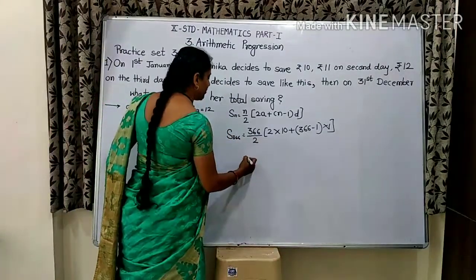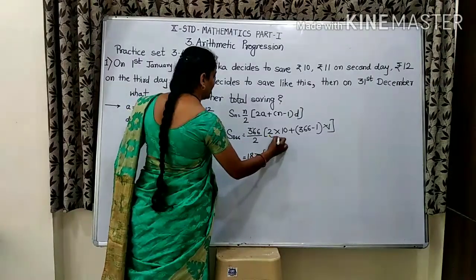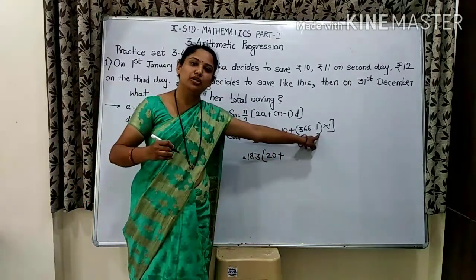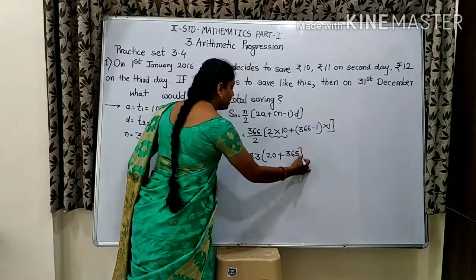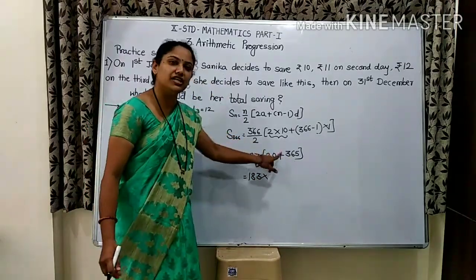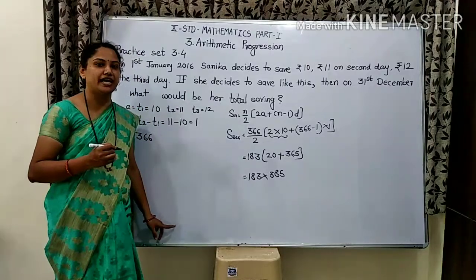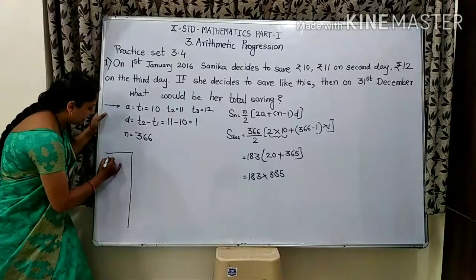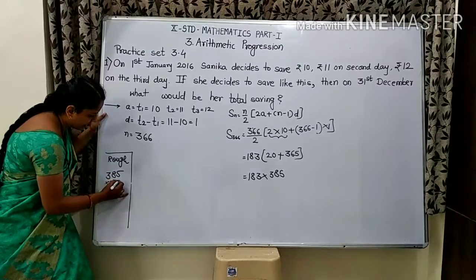366 divided by 2 is 183. 2 times 10 is 20 plus 365. 183 times 365 gives us the product.